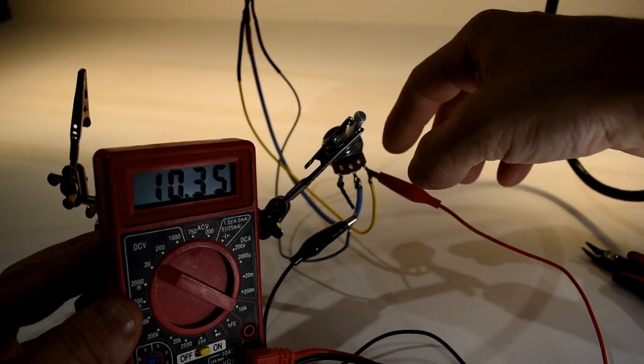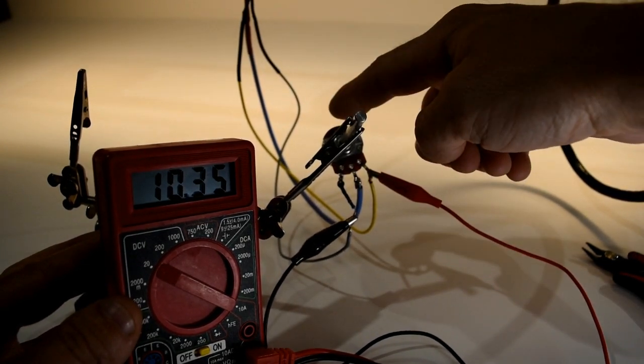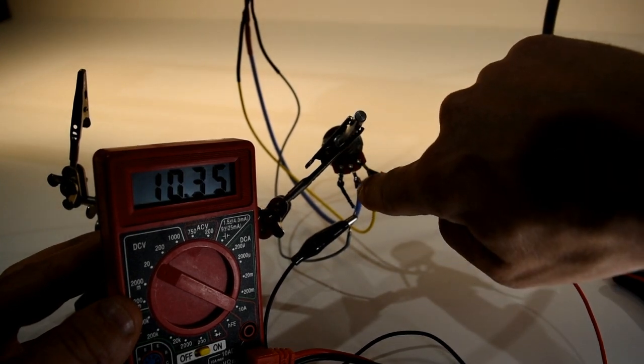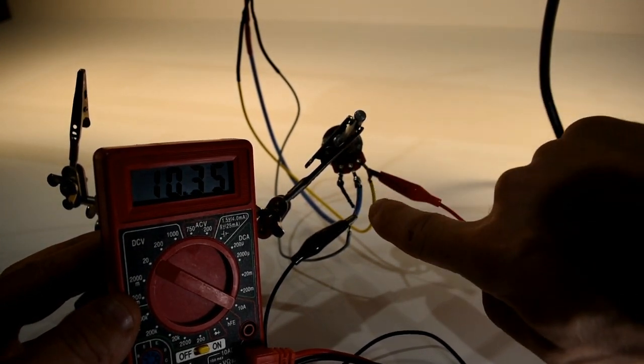So you can see here, I'm turning the potentiometer just to demonstrate that turning it has no effect on the 10 volts, which is constant out of the yellow wire.